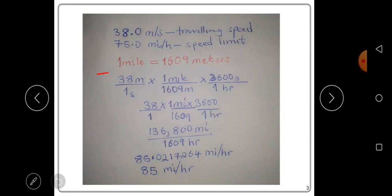The conversion factor here is: one mile is equal to 1609 meters. This is very important. At this point, I'm sure you're aware of how to convert 38.0 meters per second into miles per hour. We'll say 38 meters over one second